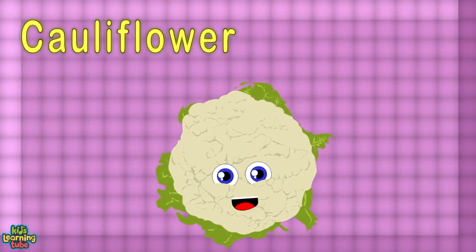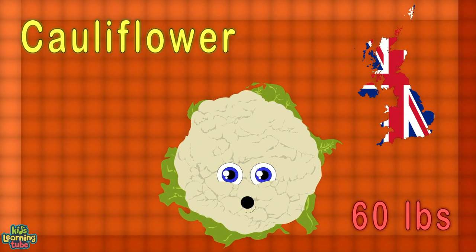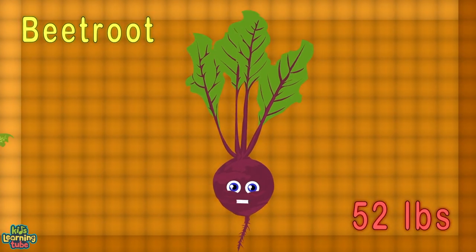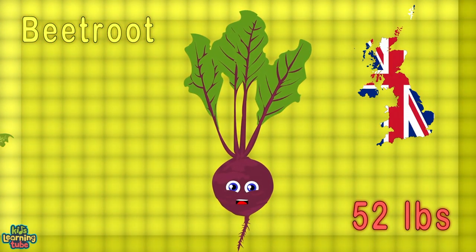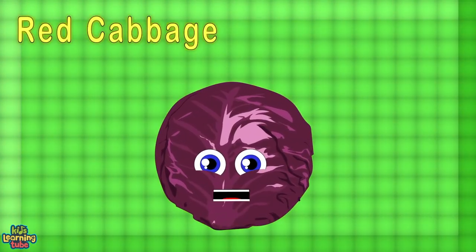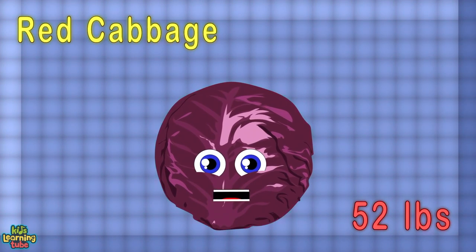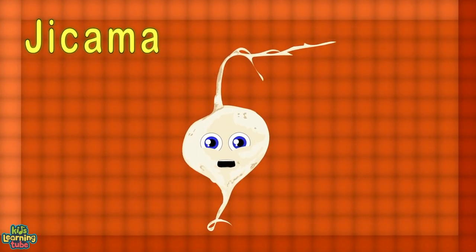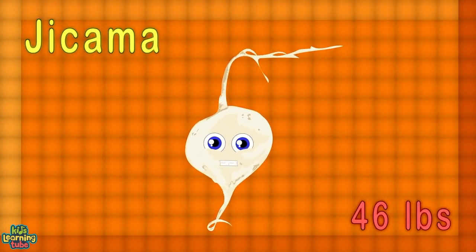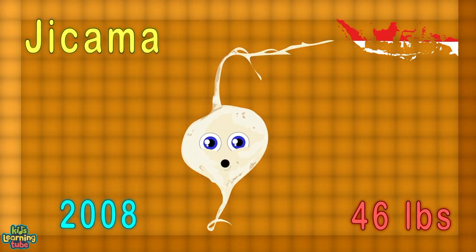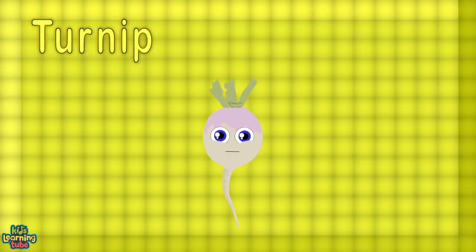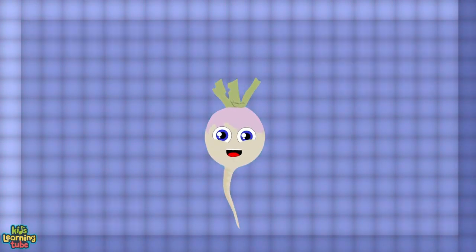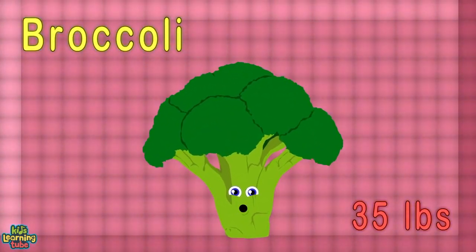I'm the largest cauliflower at 60 pounds, found in the UK in 2014. I'm Babe Ruth, 52 pounds, grown in the UK in 2019. Red cabbage, 52 pounds, from the UK in 2018. I'm the largest jicama at 46 pounds, grown in Indonesia in 2008. I'm the biggest turnip at 39 pounds, grown in the USA in 2004. I'm the biggest broccoli at 35 pounds, from the United States in 1993.